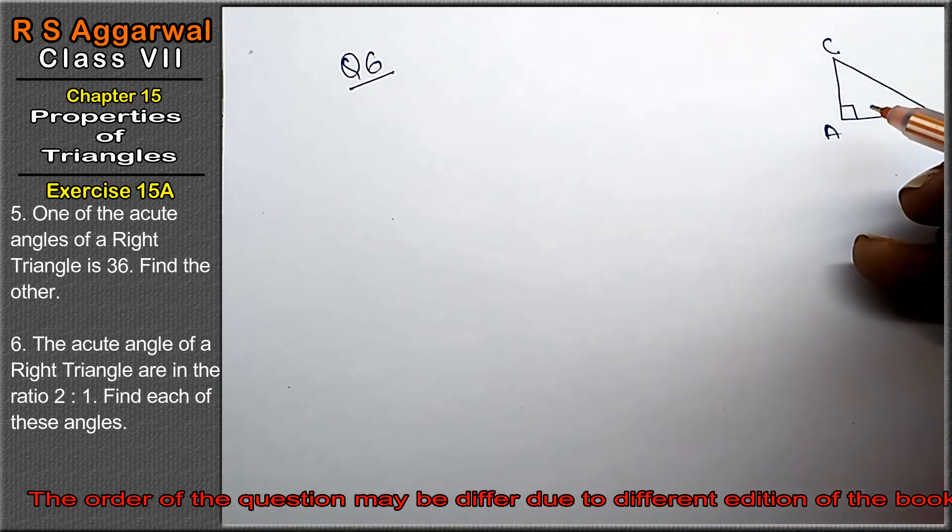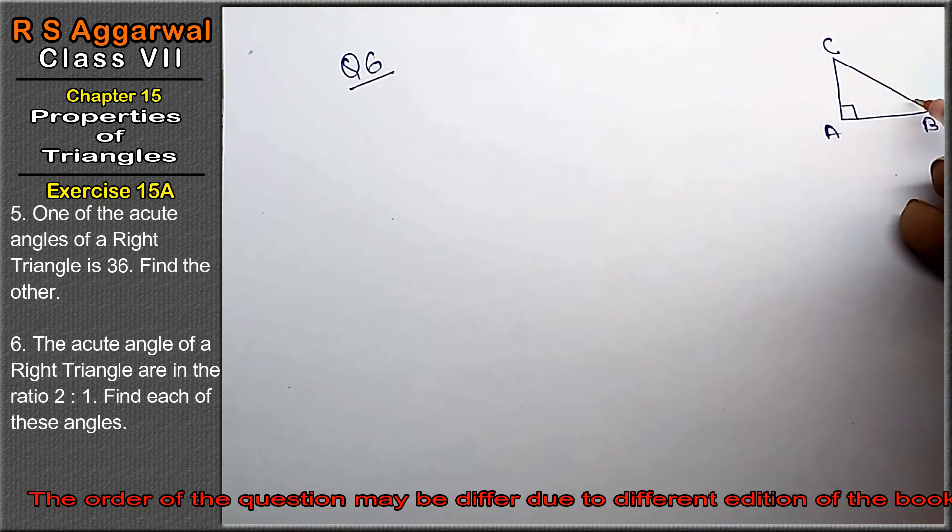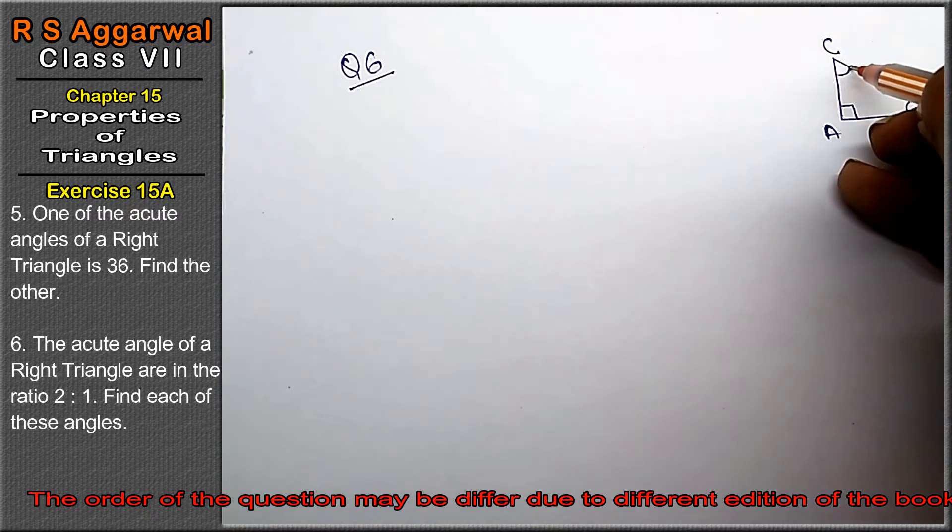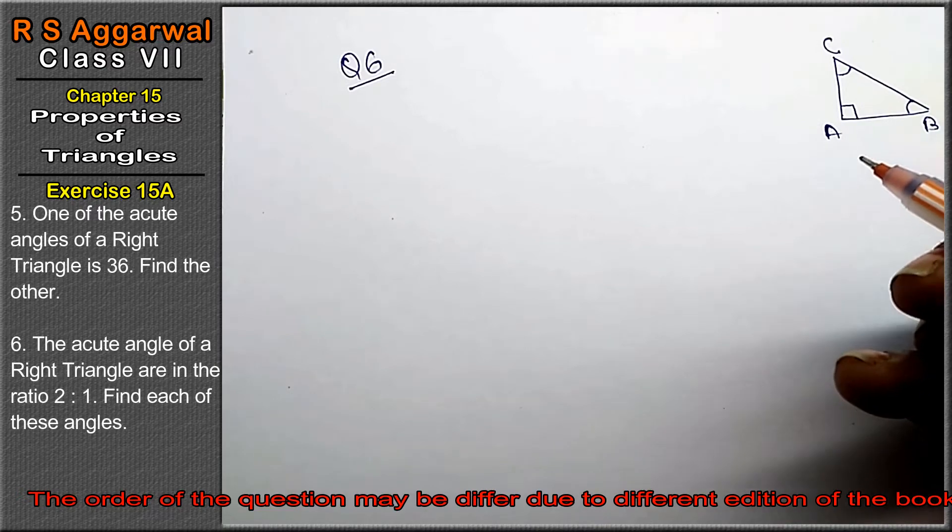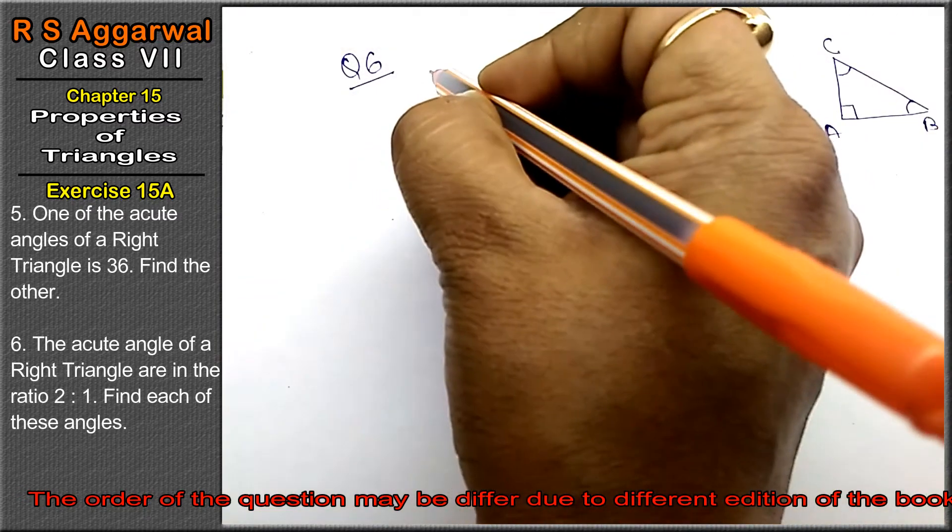Now, the acute angles of a right angle triangle are in the ratio 2 to 1. Find each of the angles. So we will take all angles.